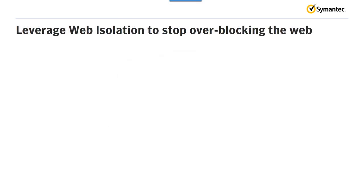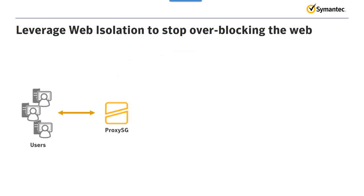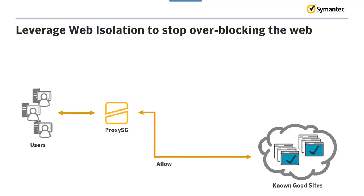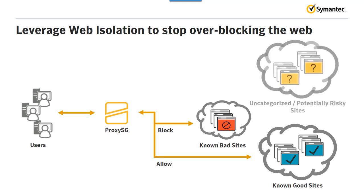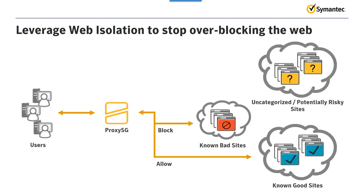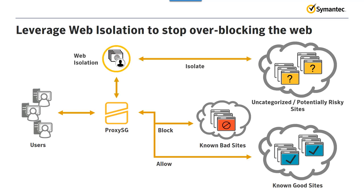To detect malware and phishing threats, web gateways employ various approaches, including URL filtering and risk-level assessment, to identify known good and bad domains. However, they are challenged to analyze and categorize new websites and sites that have no reputational information. To protect their enterprise from potentially malicious sites while avoiding overblocking web access, IT security teams can leverage web isolation.